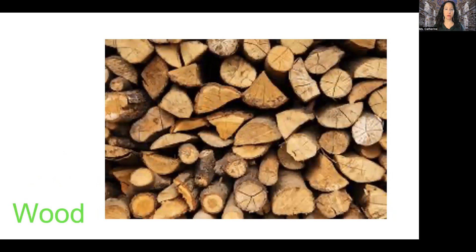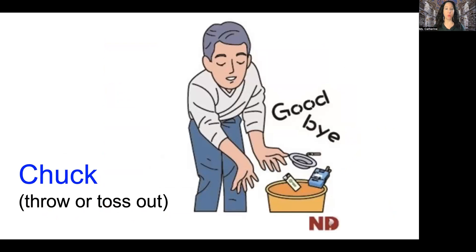So this is wood — we can chop it up. It comes from trees and we can use it for fire. This is the woodchuck. If anyone wanted to learn more about the woodchuck, look at my past video about Groundhog Day. So what does the word chuck mean? The man is chucking garbage — he's throwing or tossing out garbage. So that's what chuck means.